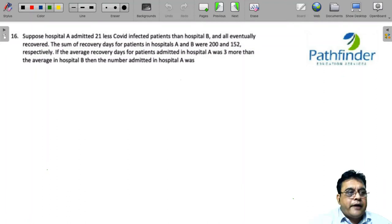CAT 2021 slot 1 question number 16. Suppose hospital A admitted 21 less COVID infected patients than hospital B, and eventually all recovered. The sum of recovery days of patients in hospital A and B were 200 and 152. So we have a comparison of two hospitals A and B. The number of patients admitted in hospital A is 21 less than the number admitted in hospital B.